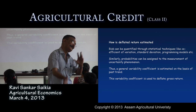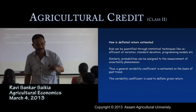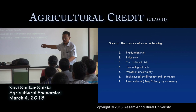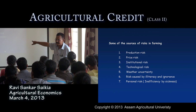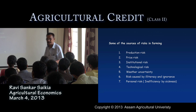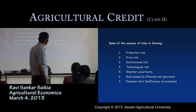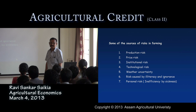Sources of risk in farming include: production risk, price risk due to fluctuation of prices, institutional risk from banking organizations, technological risk due to lack of proper knowledge in adoption of proper technologies, risk caused by illiteracy and ignorance of the farmer, and personal risk due to inefficiency by sickness. All these are considered sources of risk in the farming system.